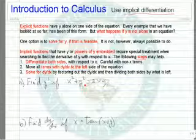Let's look at the example x squared plus y squared equals 2xy. To take the derivative of x squared, we get 2x, no problem.